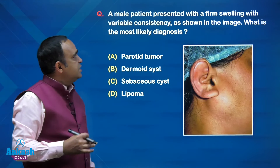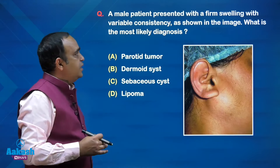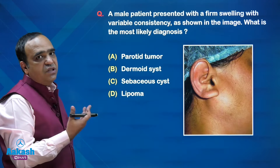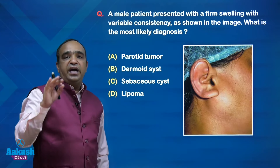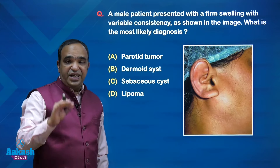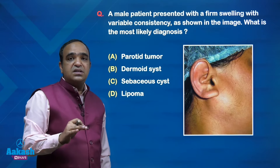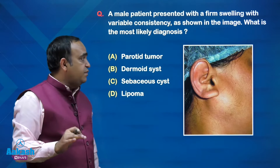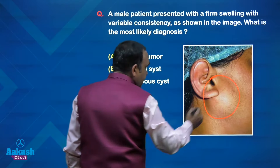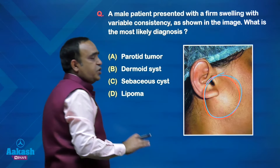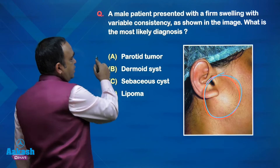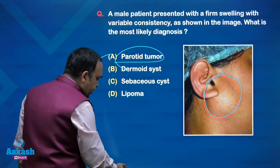A male patient presents with a firm swelling in the area shown in the picture. What is the most likely diagnosis? Any swelling in the parotid region is considered a parotid mass unless proved otherwise. This is a straightforward image-based spot diagnosis — it is nothing but a parotid tumor.